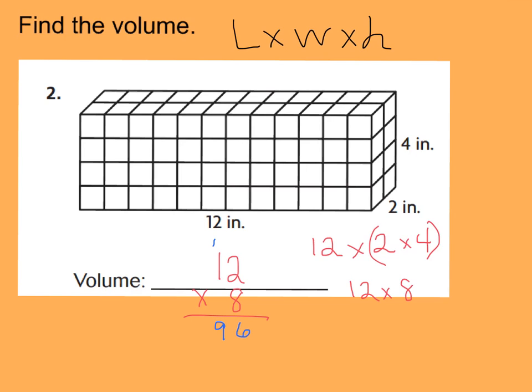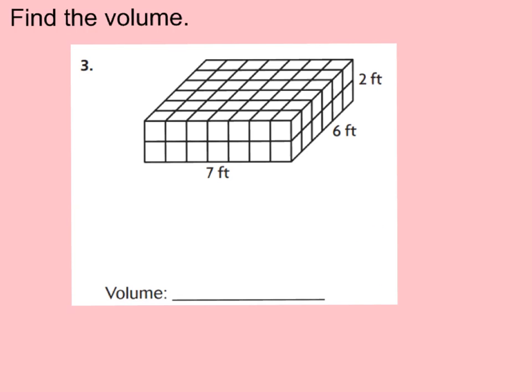Now, remember how we write that? The way I've taught you on our last slide would be inches, and you're going to put a little small 3 right up above, and that stands for cubic inches. Because remember, there are 96 little cubes, and they're all measured in inches. If you're starting to feel like the expert, go ahead and find the volume of this rectangular prism now by pressing pause.